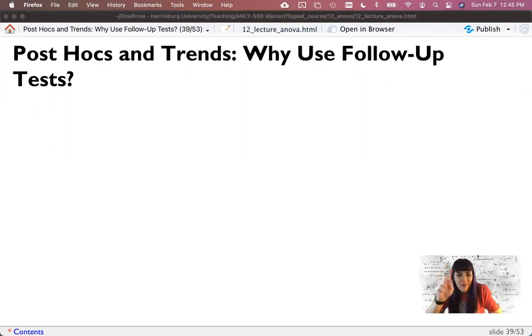All right, welcome to the very last video. You and I are both excited. So let's end up by talking about what you do when your overall ANOVA is significant. So we found our omnibus test was significant. It was a large effect size. Now what? And so we're going to talk about post hoc tests and trend analysis.